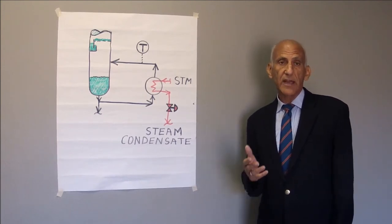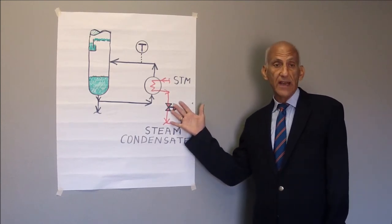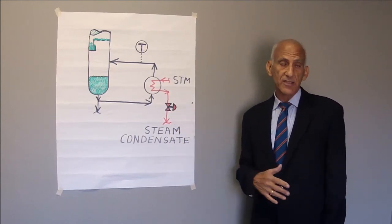Thus, we're left with this problem. How does the operator know how much to open the condensate drain valve to maximize the reboiler duty?